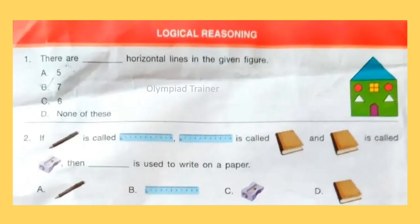Let's start with first section Logical Reasoning. Question 1: There are dash horizontal lines in the given figure. Answer is Option B, 7.